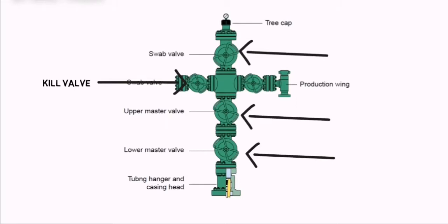In other circumstances it is used to insert workover tools and logging tools. The kill valve is primarily used for injection of fluids such as corrosion inhibitors or methanol to prevent hydrate formation.